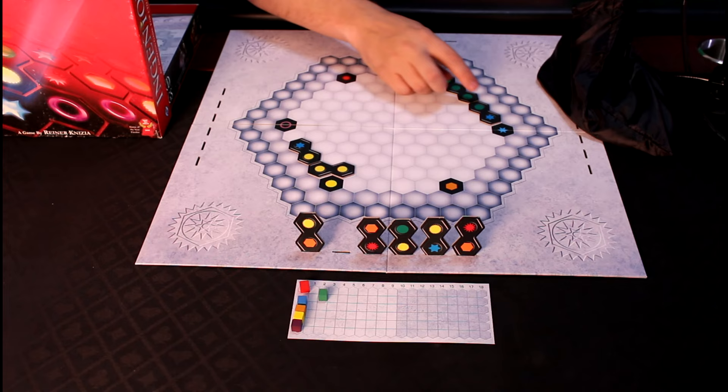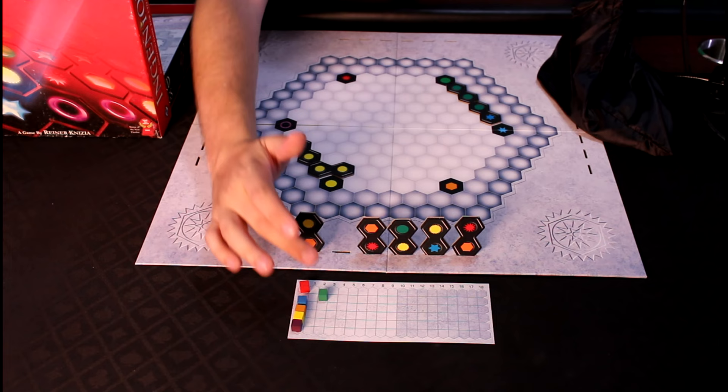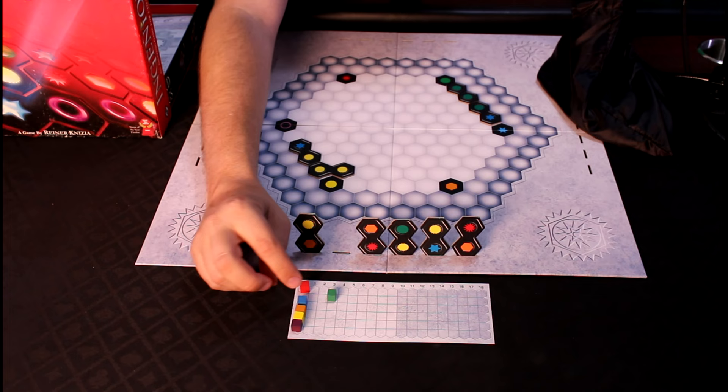However, if I change my move to this, I would score two green points. In fact, I would score three green points since they are all in a line, and I would score one blue point. This works a little bit better for me.